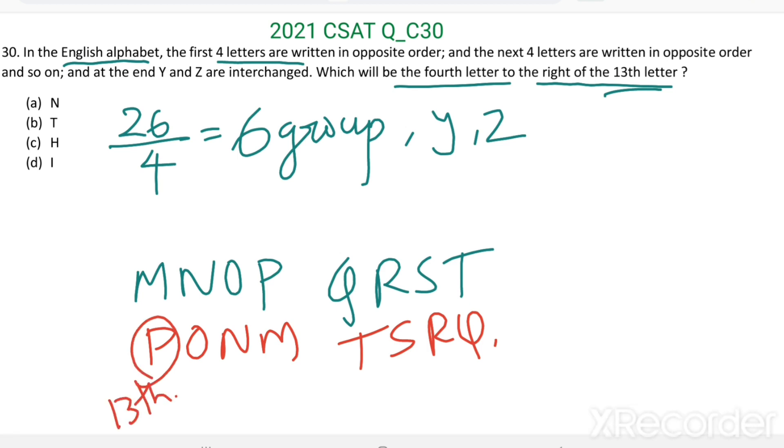Then fourth letter to the right of the thirteenth letter is 1, 2, 3, 4. That is T. Option B is the right answer.